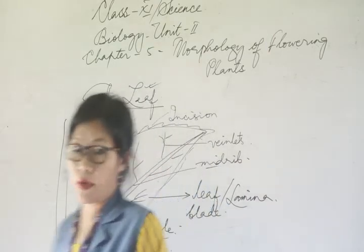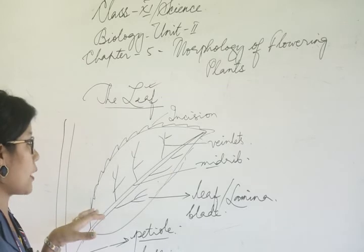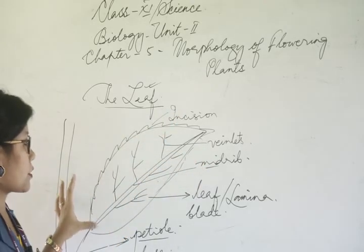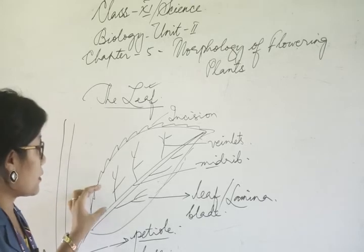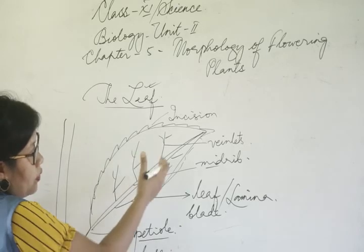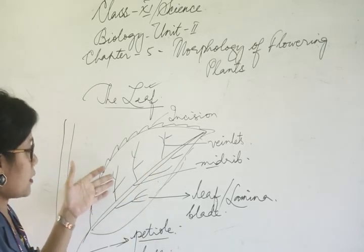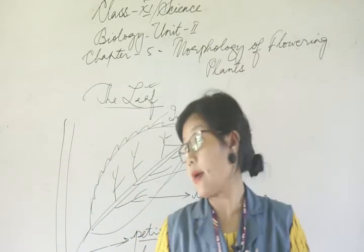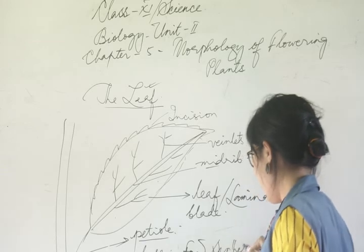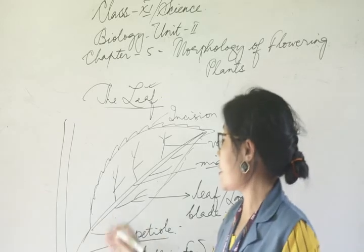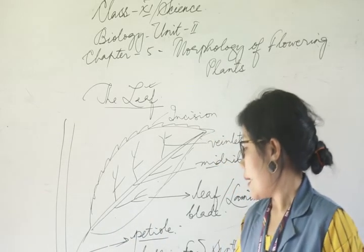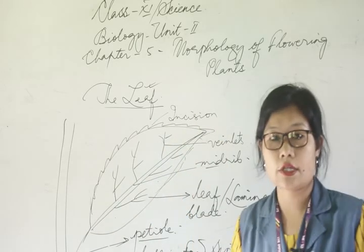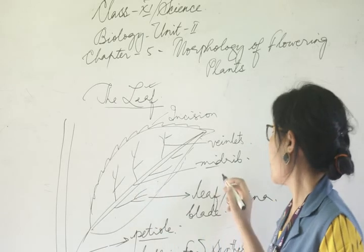The midrib and veinlets are helpful in food synthesis or photosynthesis.